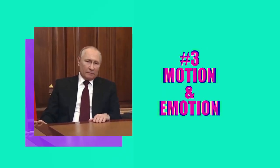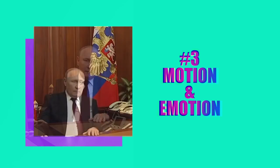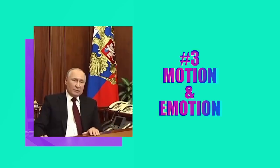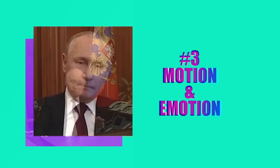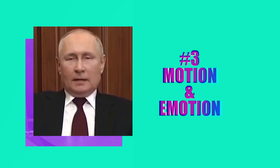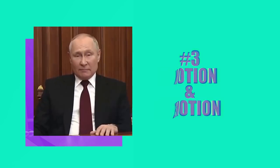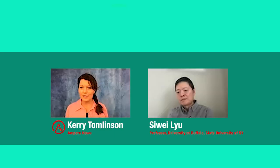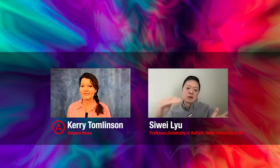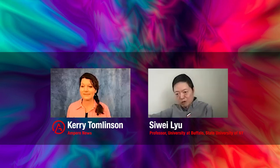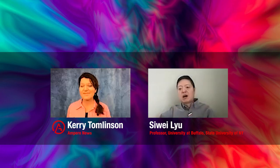Number three, check the motion and emotion of the person. Does it match what they're saying? For example, here, false Putin makes a big announcement that they've made peace with Ukraine, but with a strange shrug and an odd facial expression. Not natural in this kind of speech. As they become easier and less expensive to make, we're going to see a growing trend of more deep fakes — better quality and harder to detect.